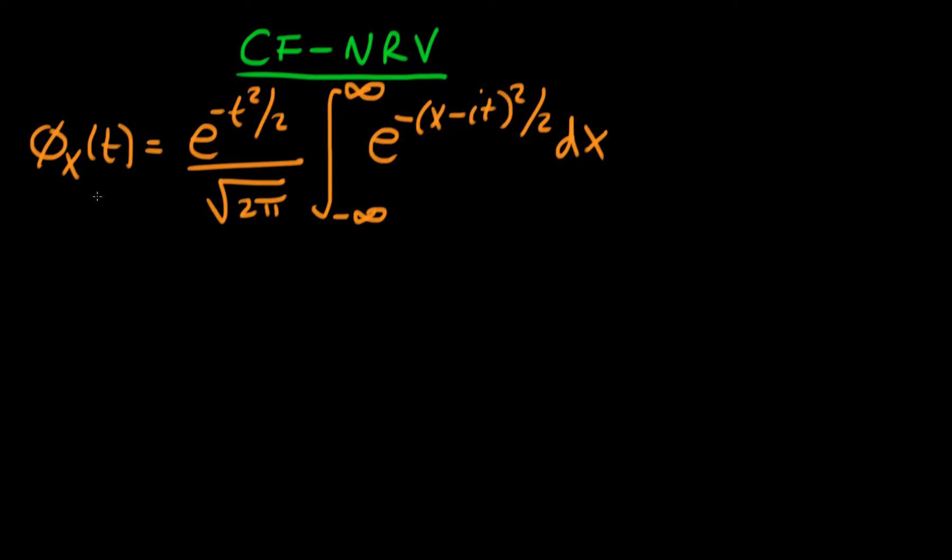In this video we're going to be getting a little bit closer to deriving the characteristic function for our standard normal random variable. We're going to build off what we've worked on before, so before we found that the characteristic function for our normal random variable was given by this stuff on the right hand side.